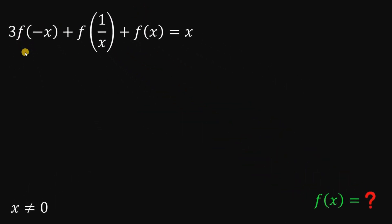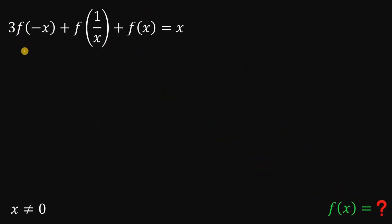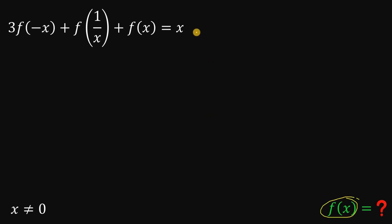Alright, so given this functional equation — 3 times f of negative x, plus f of 1 over x, plus f of x equals x — wherein x is not equal to 0, we want to find f of x.